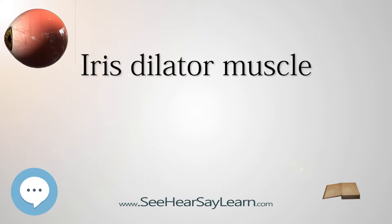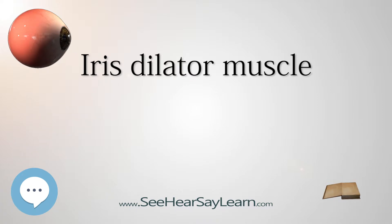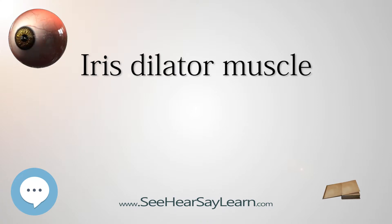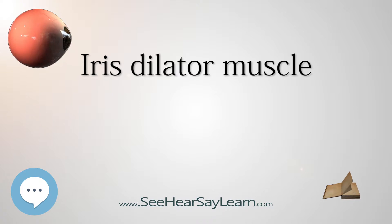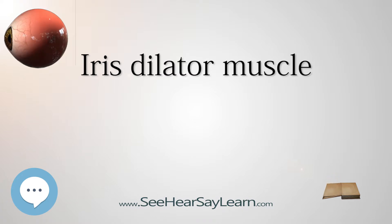The dilator muscle is innervated more specifically by post-ganglionic sympathetic nerves arising from the superior cervical ganglion as the sympathetic root of ciliary ganglion. From there, they travel via the internal carotid artery through the carotid canal to foramen lacerum. They then enter the middle cranial fossa above foramen lacerum, travel through the cavernous sinus in the middle cranial fossa, and then travel with the ophthalmic artery in the optic canal or on the ophthalmic nerve through the superior orbital fissure. From there, they travel with the nasociliary nerve and then the long ciliary nerve.